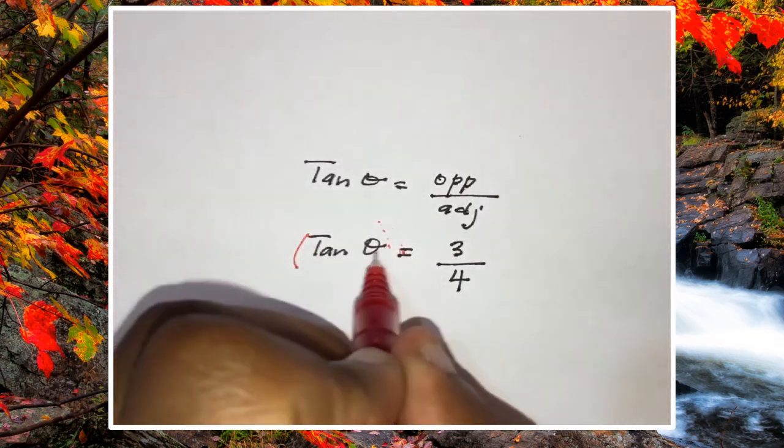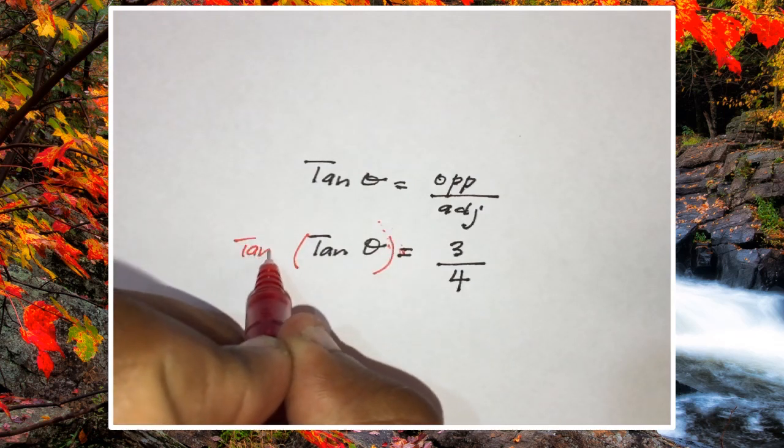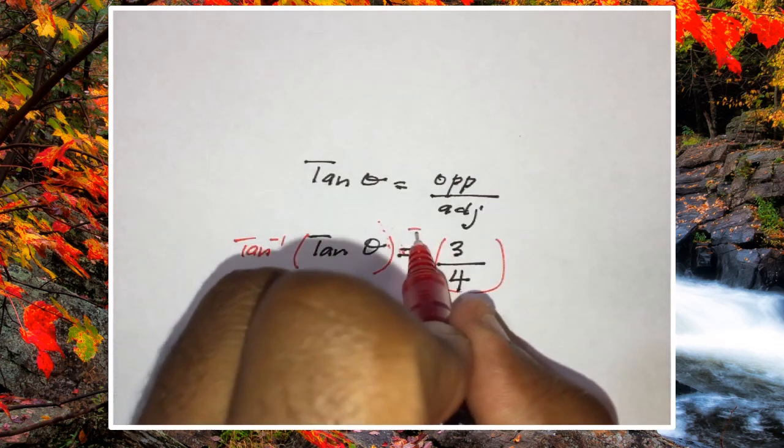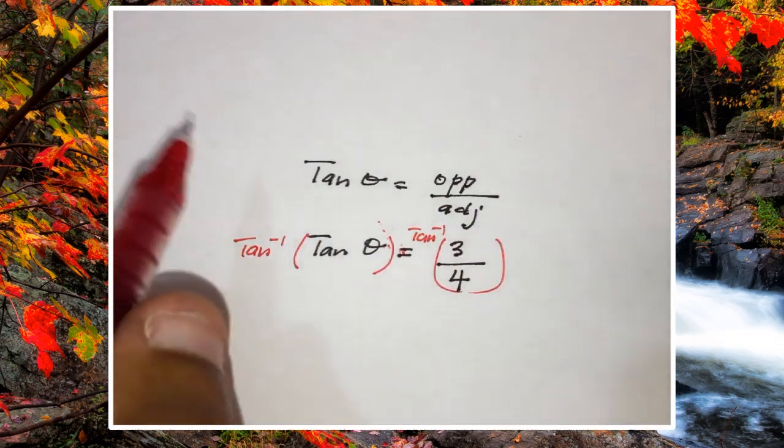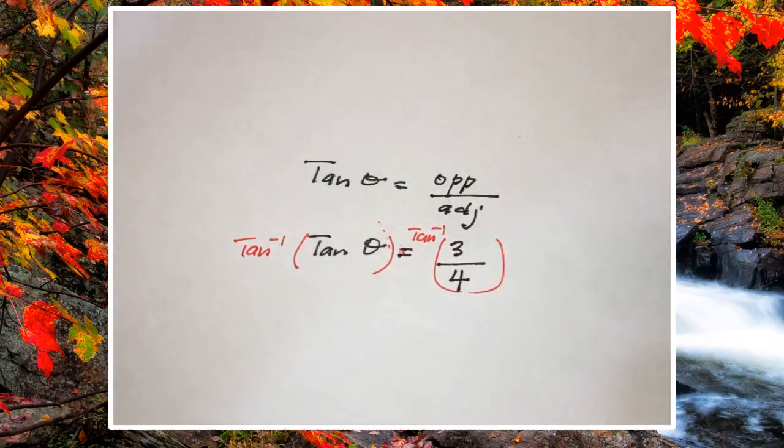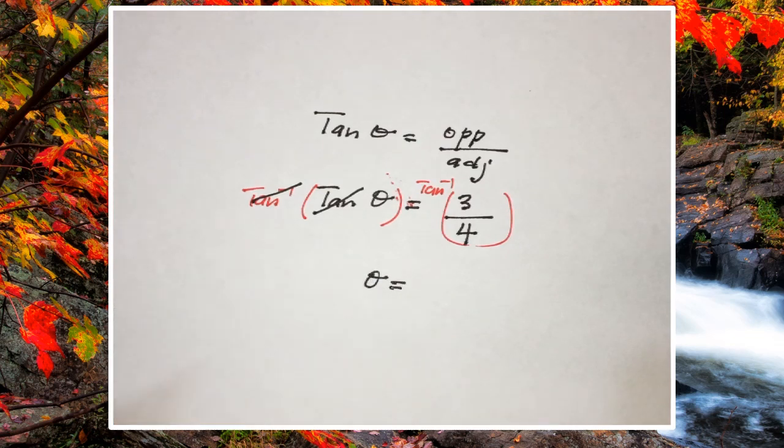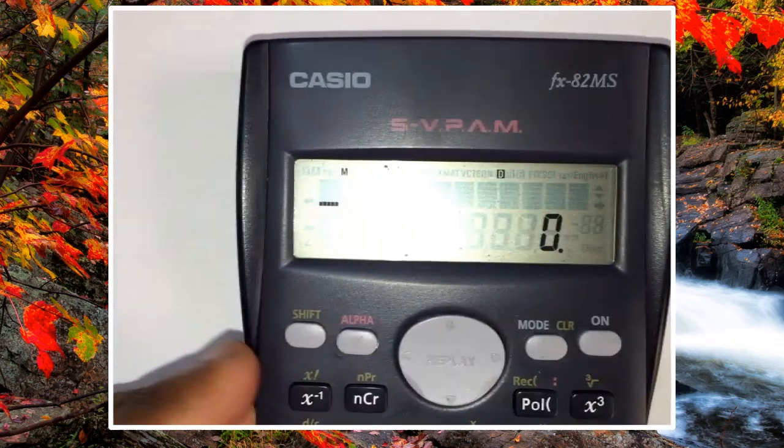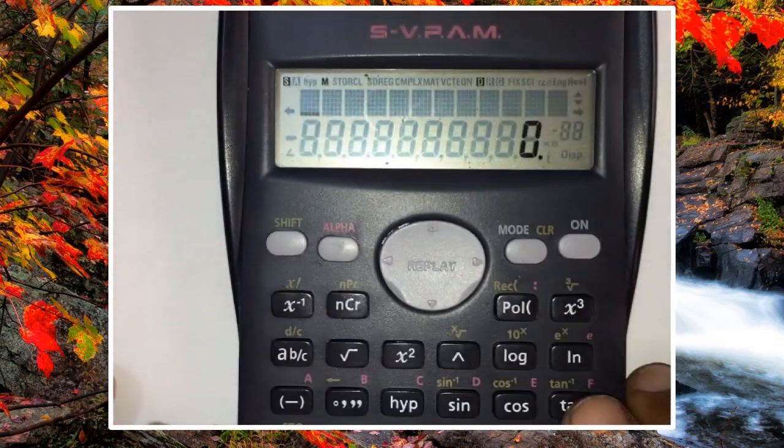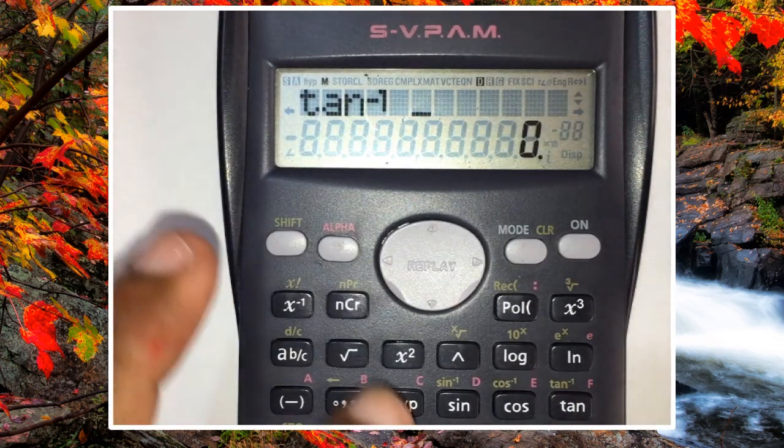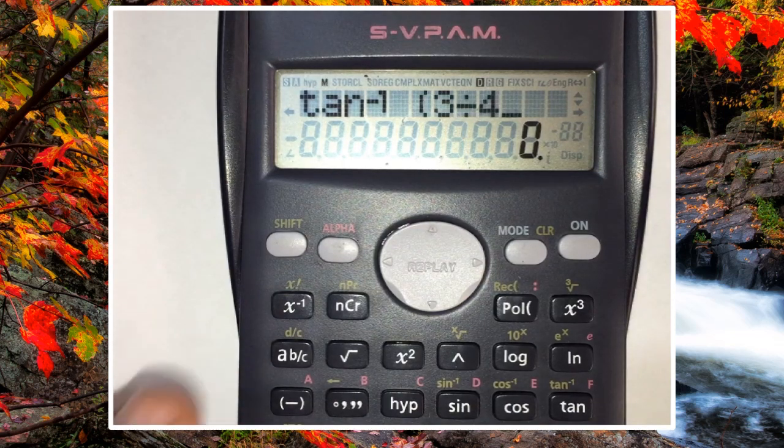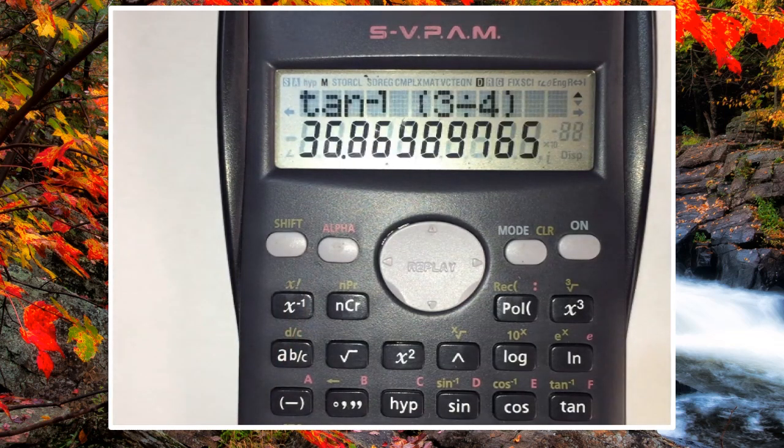To get rid of tan, we must use tan inverse. So I'm going to tan inverse both sides. Tan inverse—what that does is tan inverse will cancel tan, leaving me with just the angle I'm interested in. And all I need to do now is to put into the calculator tan inverse of three divided by four. So I'm going to press shift and the tan button, boom, open bracket, three divided by four, close bracket.